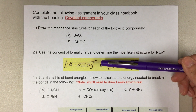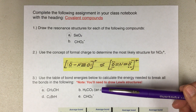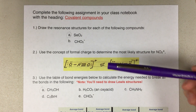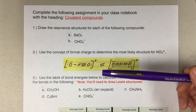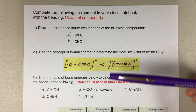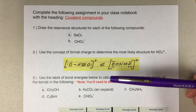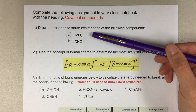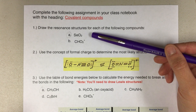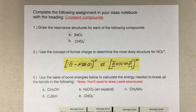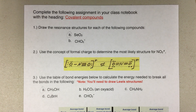The three topics are resonance structures, formal charge, and bond energies. Keep in mind that for all three types of problems, you are expected to have a Lewis structure. Even in the bond energies, you'll need to draw a Lewis structure to get your answer. Hopefully you'll be able to finish the assignment after that.